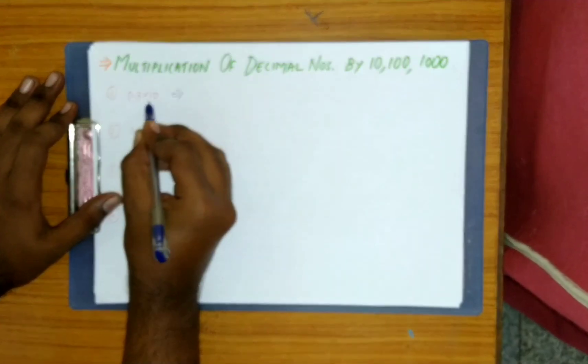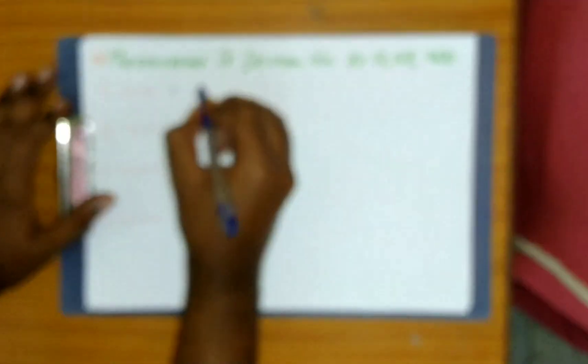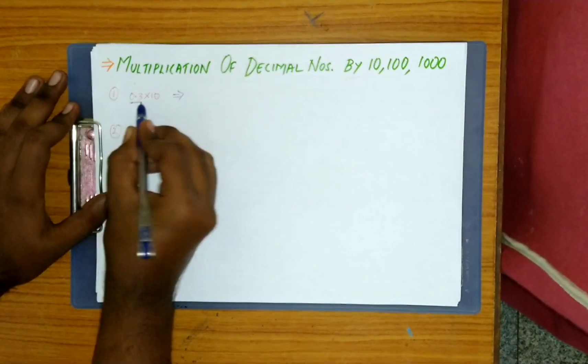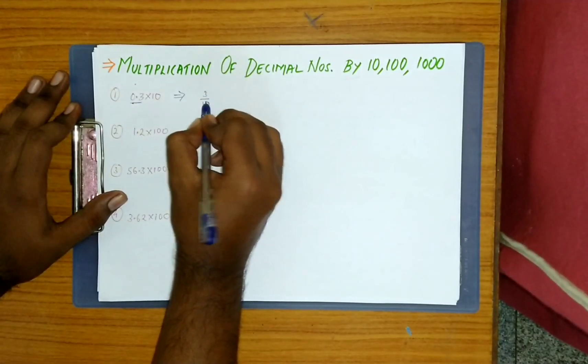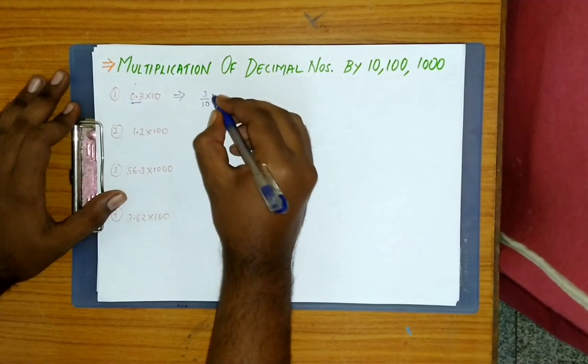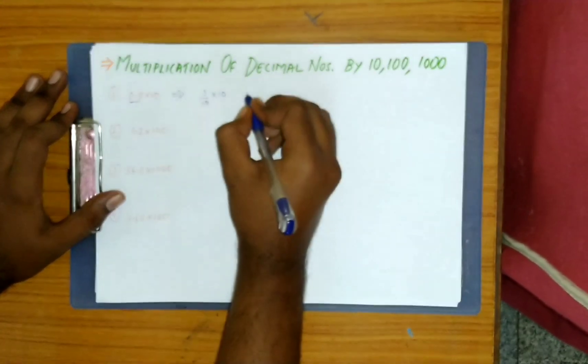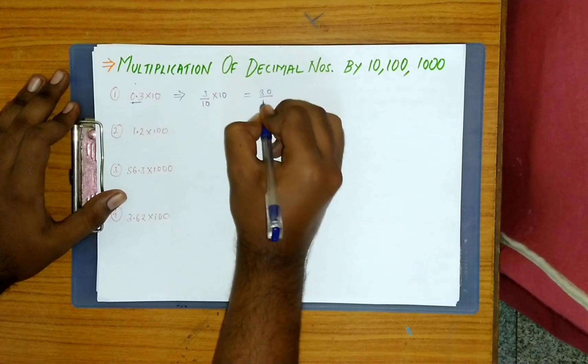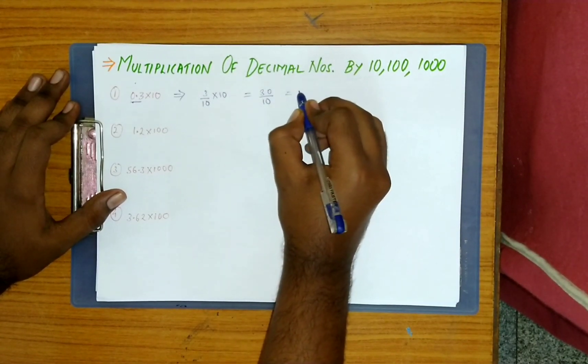0.3 into 10. Convert the decimals into fraction, that is 3 by 10. 0.3 is 3 by 10 into 10, which is 30 by 10, so you'll get 3.0. This is the normal method.